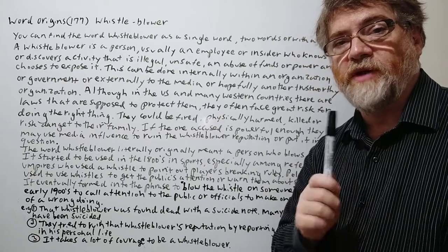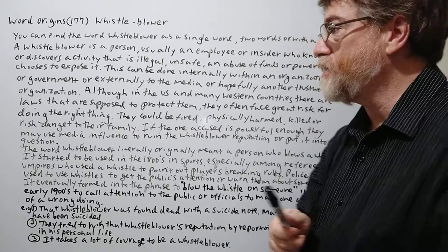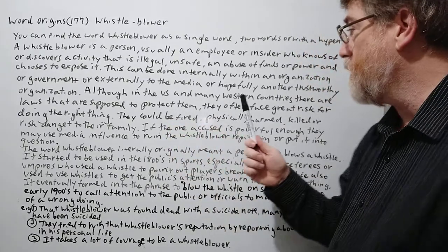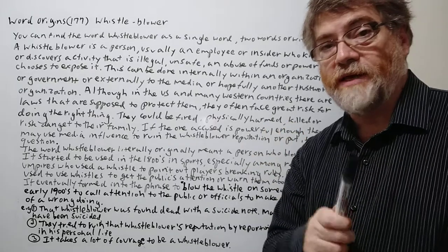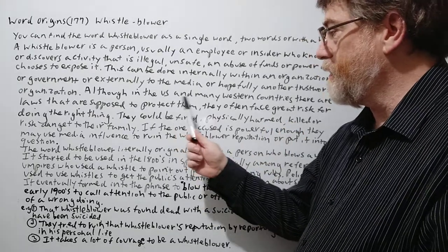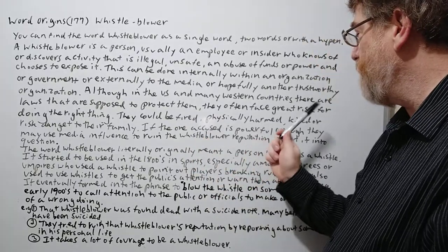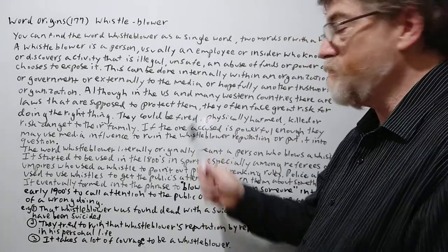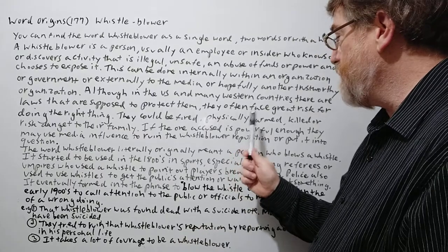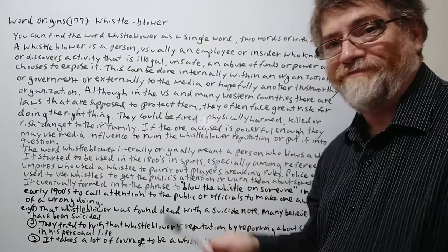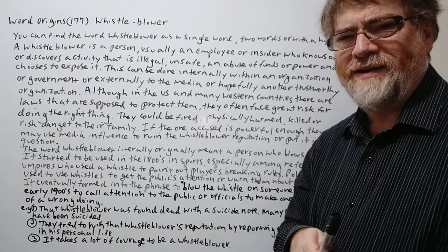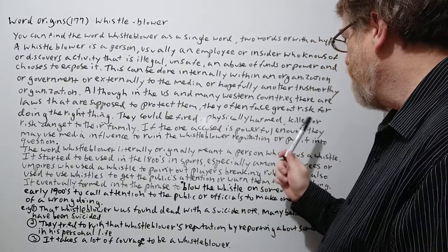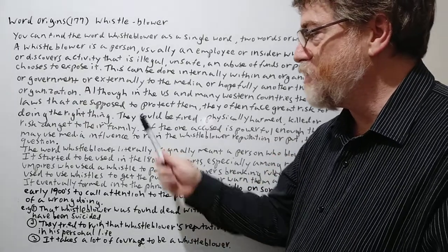As a whistleblower, you have to be careful who you can trust. Although in the U.S. and many other Western countries there are laws supposed to protect them, whistleblowers often face great risk for doing the right thing. They could be fired, physically harmed — maybe somebody will beat them up — or they could suddenly have an accident that may not have really been an accident. They could be killed or risk danger to their family.